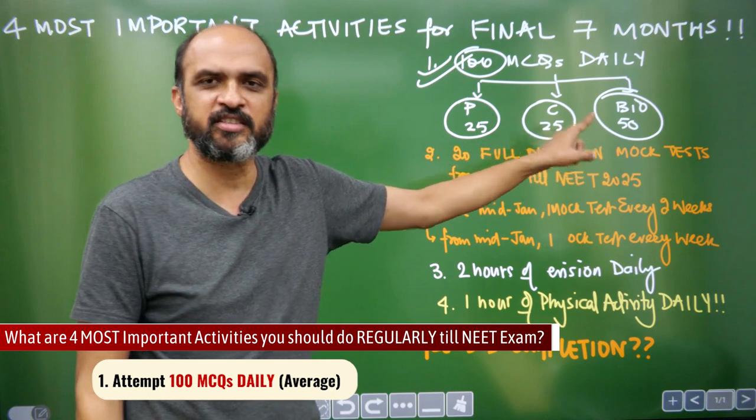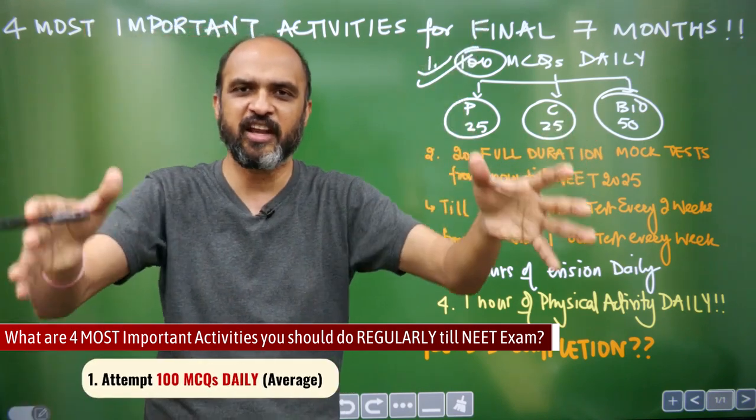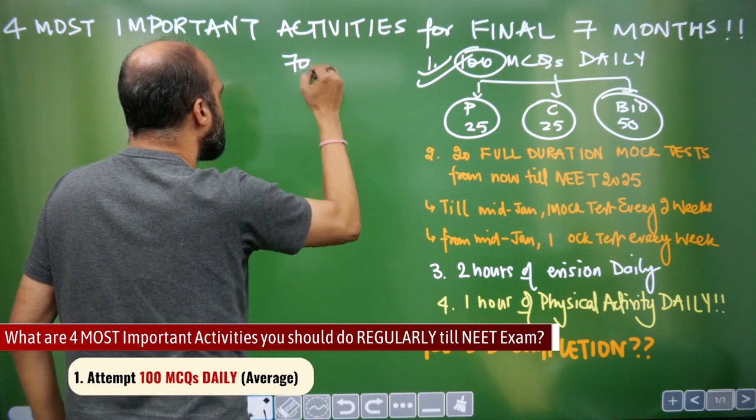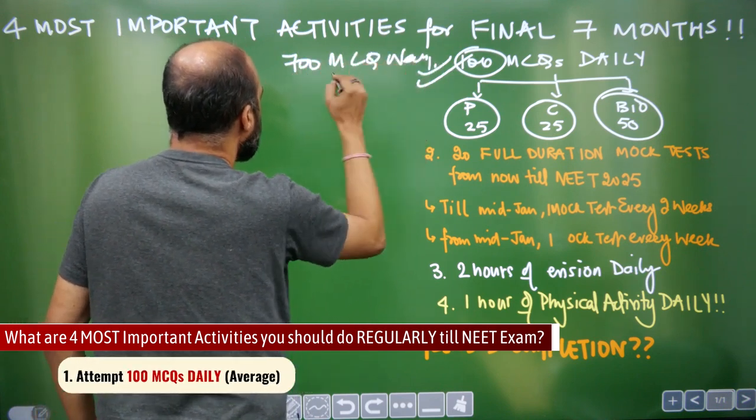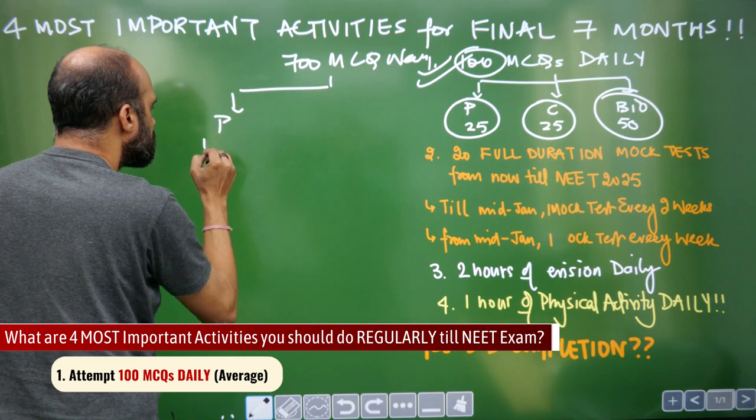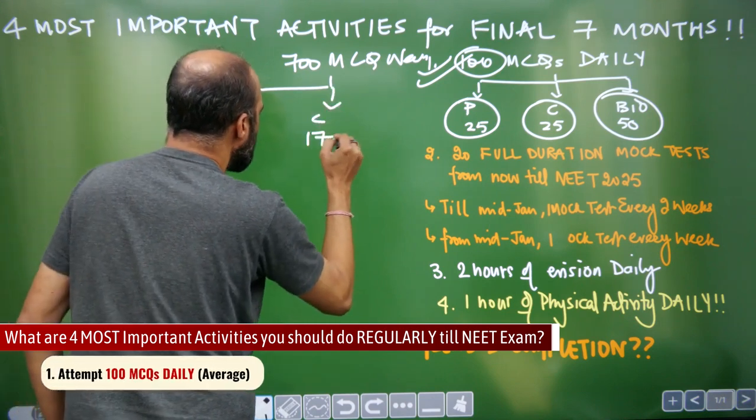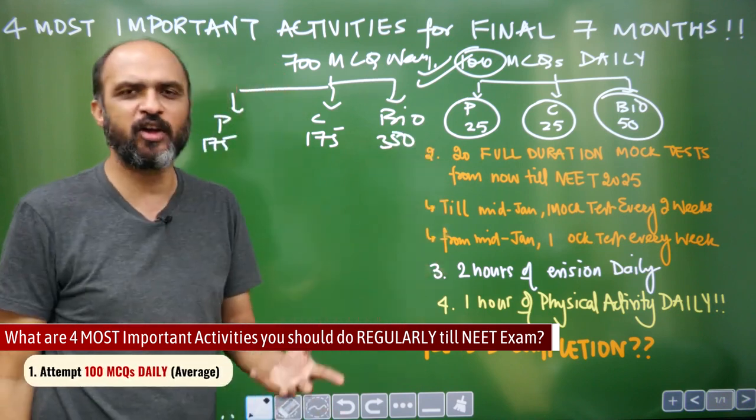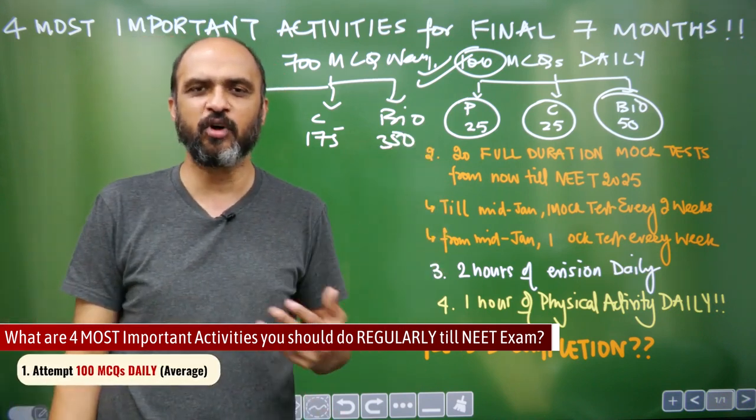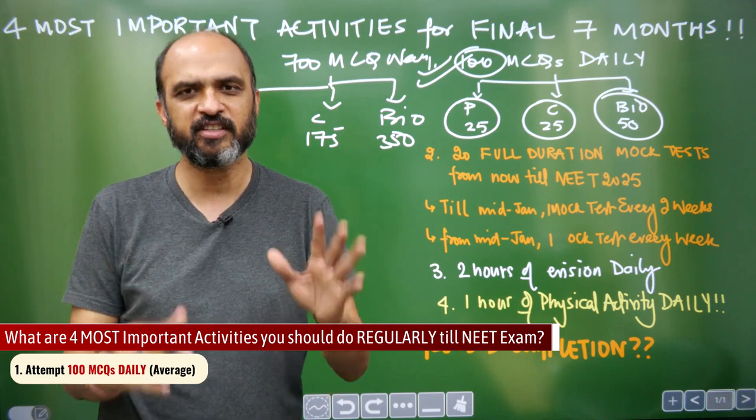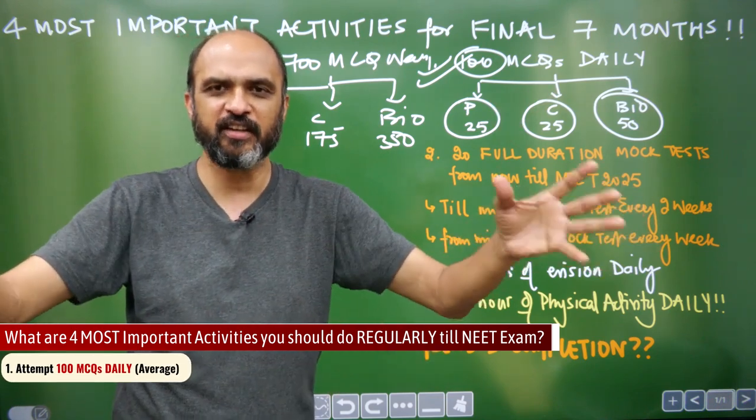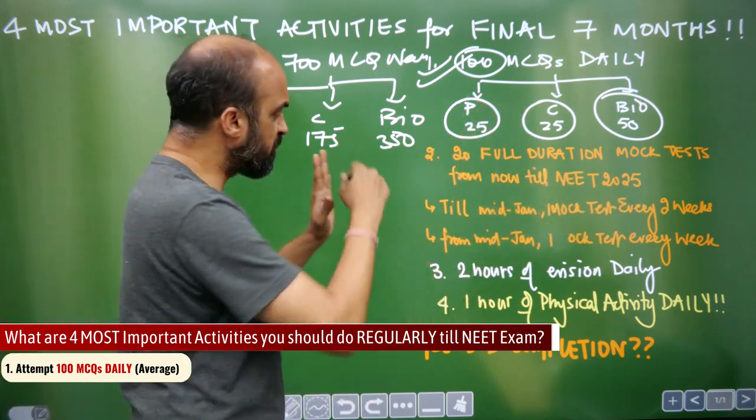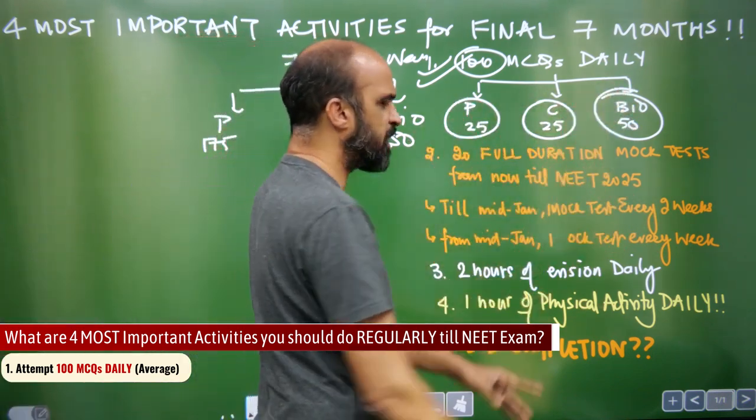It is not good enough that you are practicing only questions from Bio. If you don't want to maintain this balance every day, think about it like this: 100 MCQs daily, which means 700 MCQs weekly. Physics 175, Chemistry 175, Bio 350. So in some day, if you want to practice only Bio MCQs, that is fine. Some other day, you want to practice MCQs of only Physics, that is fine. But on an average, in a week, you should be doing 700 MCQs with the balance of Physics, Chemistry and Bio.